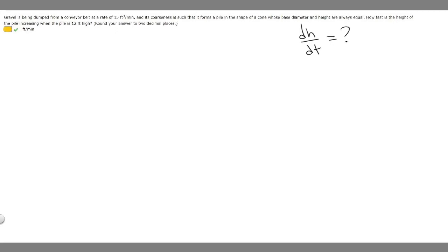Let's write down what we're given. They told us that gravel is being dumped from a conveyor belt at a rate of 15 feet cubed per minute. This is volume, so the volume is changing at 15 feet cubed per minute. So the change in volume over time, dV/dt, is equal to 15.